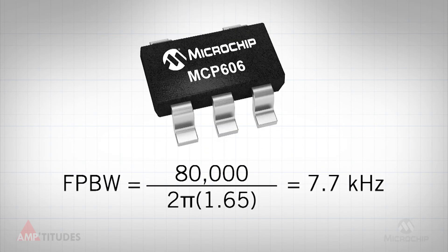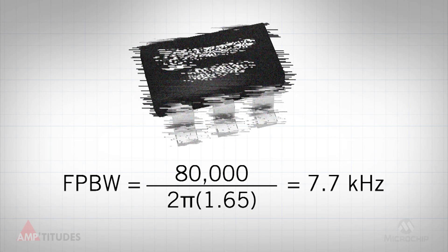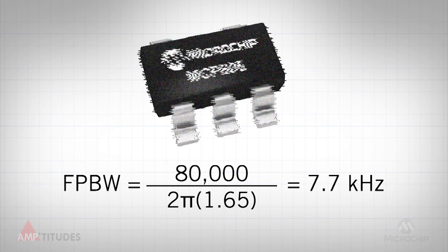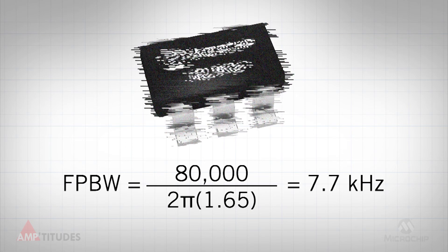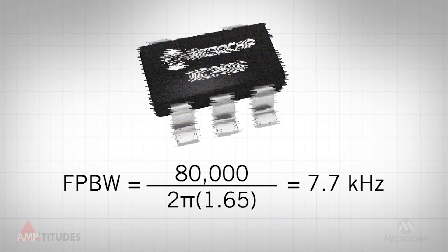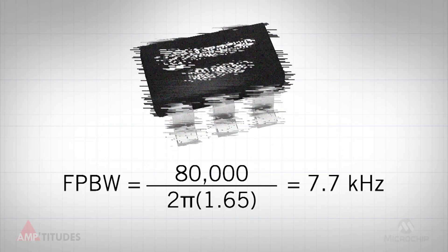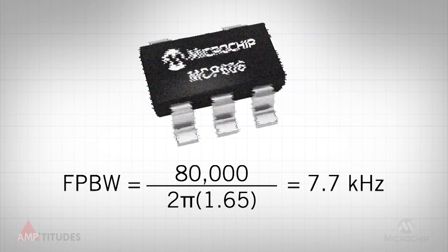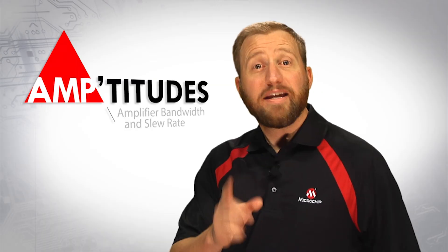This suggests that at the maximum input frequency of 10 kHz, the MCP606 will be slew limited, hence causing distortion in the output signal. So for this application, selecting a faster slewing op amp would be the better choice.